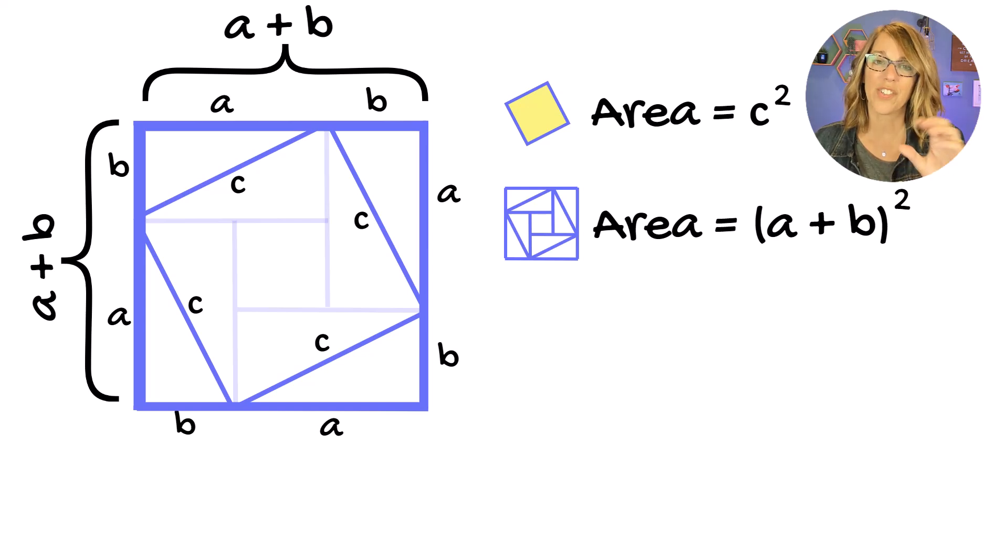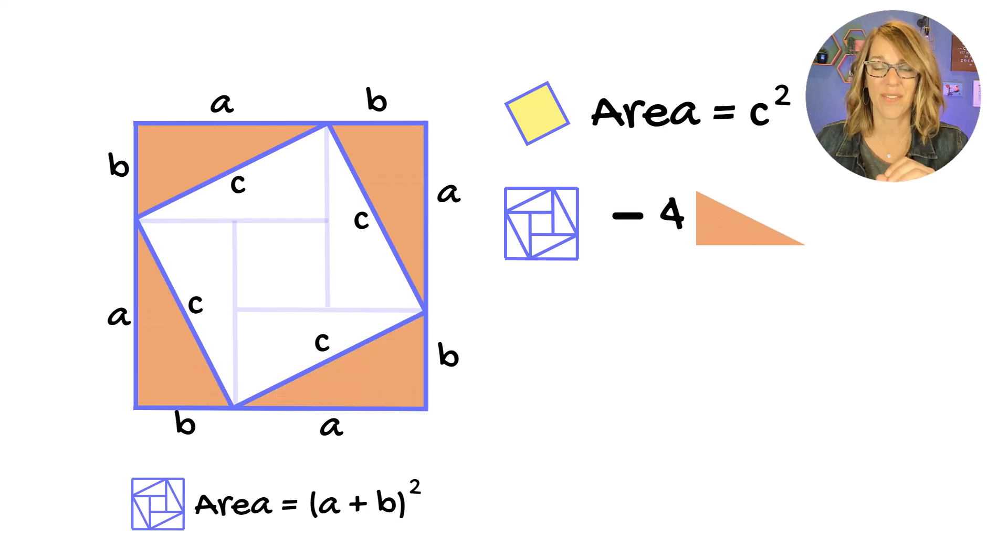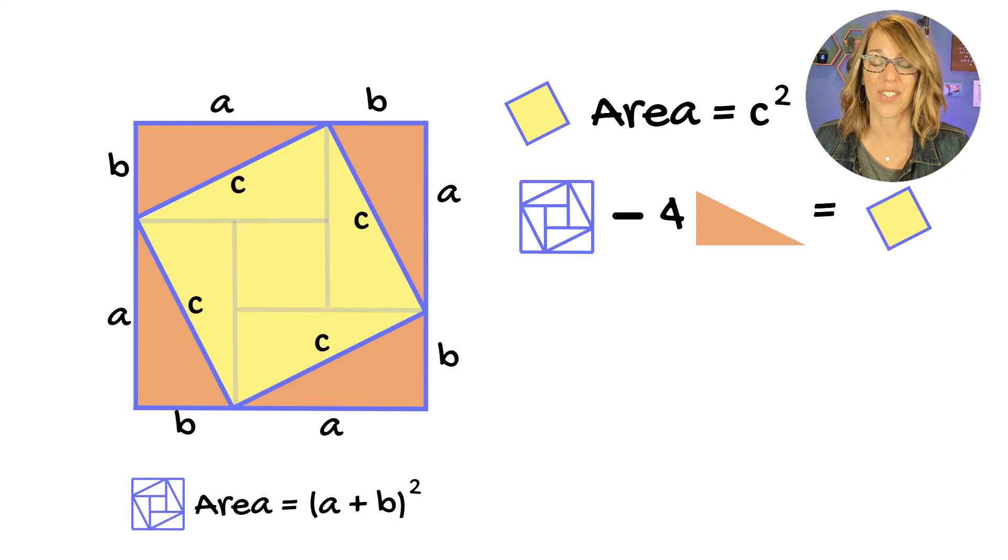Now to get from the larger square to the smaller square, I need to subtract off each of these four triangles, and this will give me the area of the inner square.